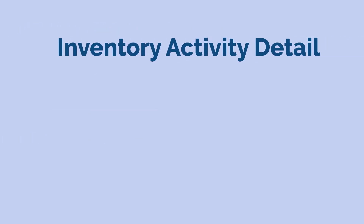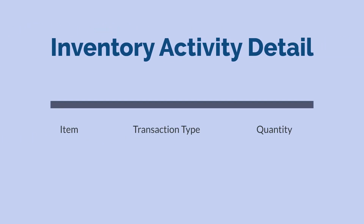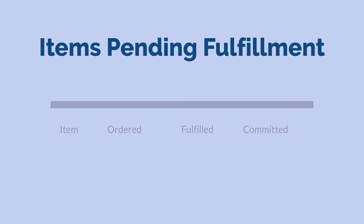The Inventory Activity Detail Report shows the trends for how much of an item is regularly committed on transactions, while the Items Pending Fulfillment Report helps you to speed up your fulfillment process by highlighting the items that have been committed on orders and are already available in your inventory.